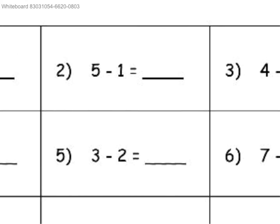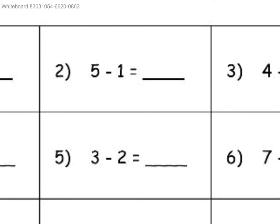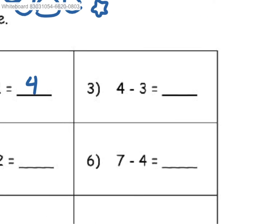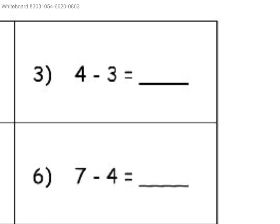Number 2: 5 minus 1. You go back from 5 — 4. Leaving you with the answer, 4. Number 4: you go back 3 times from the number 4, leaving you with 1.